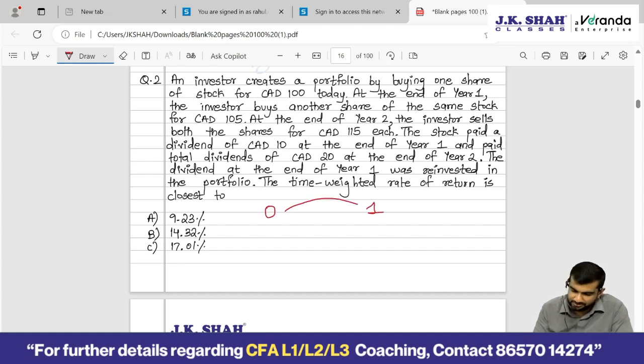So what was your investment at time 0? 100. That 100 rupees grows to how much? At the end of year 1 the stock grows to 105. And additionally, is it giving any dividend? The stock paid a dividend of $10 at the end of year 1. So my 100 rupees investment grows to 115. 5 rupees is the capital appreciation, 10 is the realized gain of dividend. So 15 percent is my return. So that I have got for year 1.